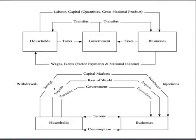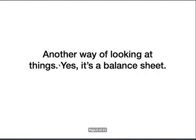You must understand the circular flow model, which begins with households that transfer their labour and capital to businesses. Businesses pay wages and rents back to households. Households pay taxes to the government, businesses pay taxes to the government, and the government transfers money back to households. There are injections and withdrawals — savings, imports, and taxes withdraw from the flow; government spending, investment, and exports inject back in. Savings become investment through capital markets, and there is income and consumption. The notion of flows and stocks of goods is very important.